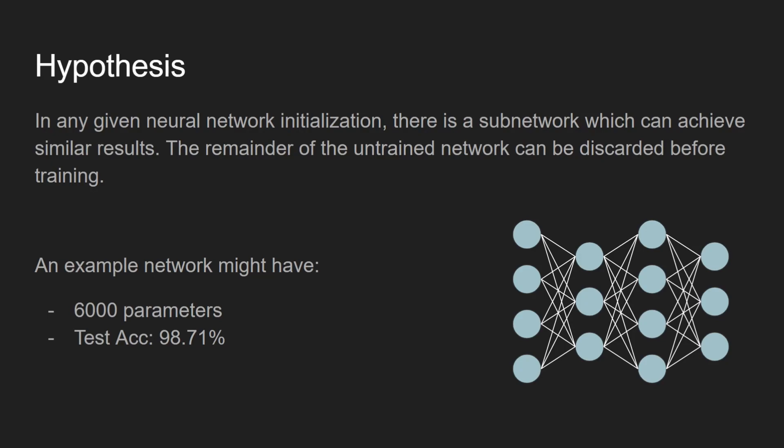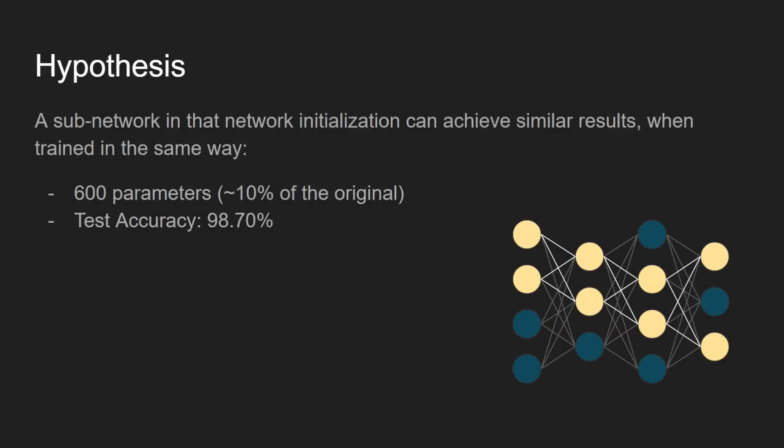For example, a network might have 6,000 parameters and achieve 98.71% accuracy once trained. Within that network, there is also a subnetwork of much smaller size, say 600 parameters, which achieves 98.7% accuracy once trained. The key here is that the pruning is being done before training, rather than after training.